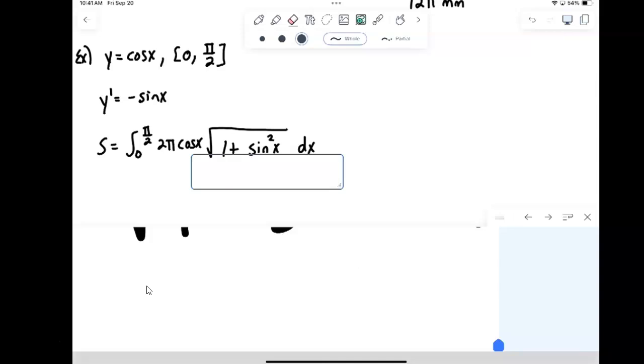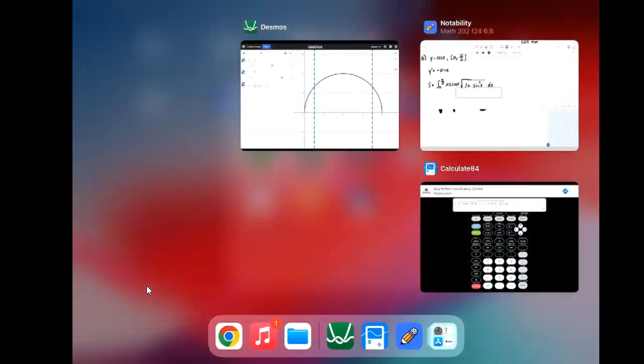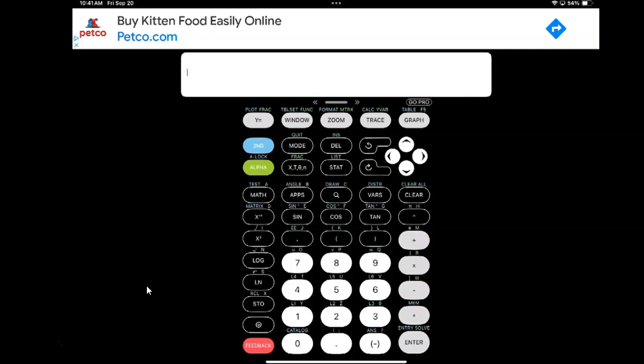So we're just going to go straight to technology here. So I'm just going to pull up my fnInt. Again, leave the pi part out. Actually, we can actually even include the pi here since we're just approximating it. So 2 pi times, 2 pi fnInt,